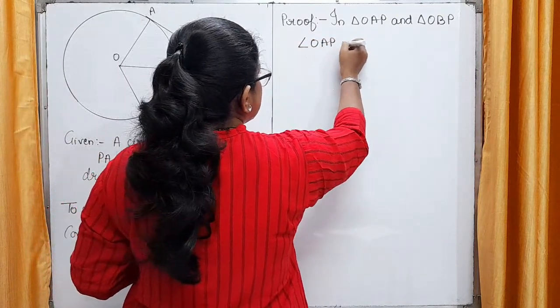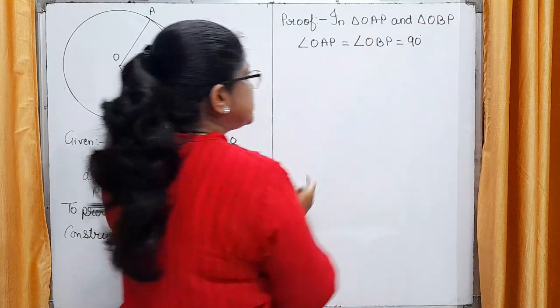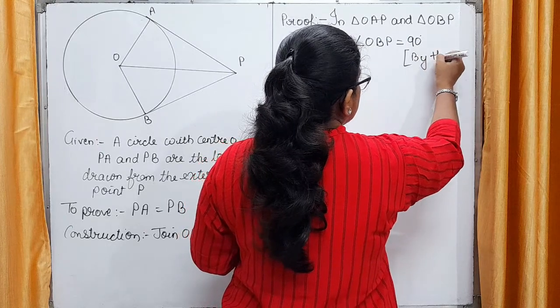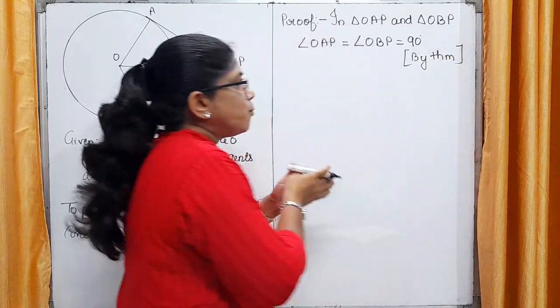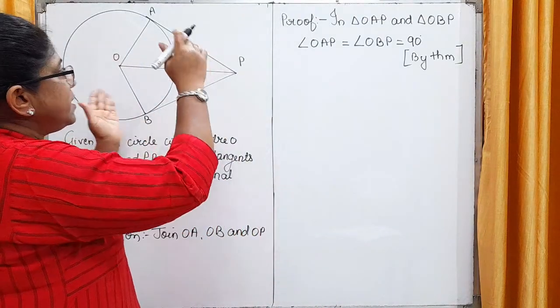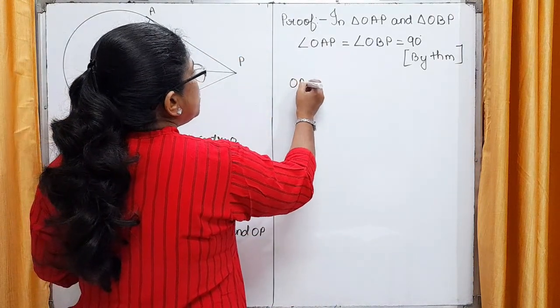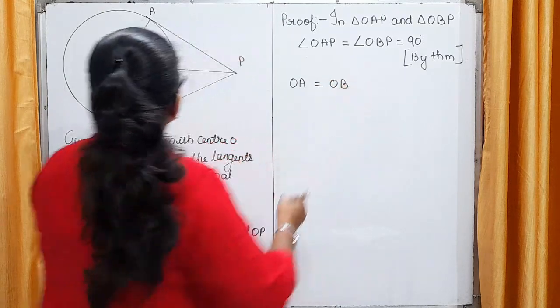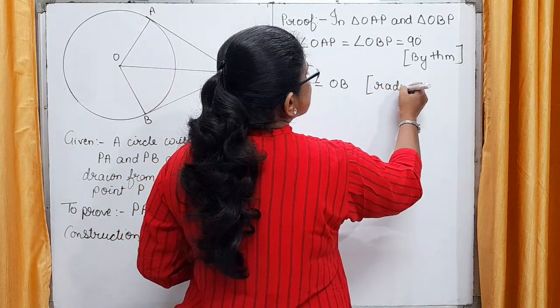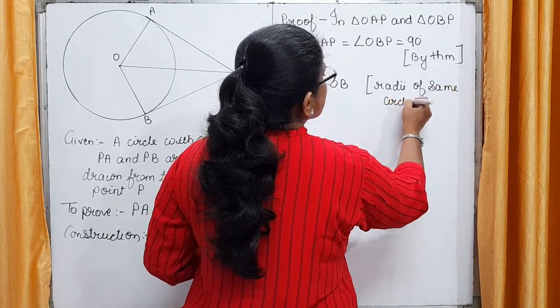Angle OAP is equal to angle OBP and this is equal to 90 degrees. How? Why? Let us write this is by theorem. Yes. In one theorem, we have one theorem in which it is said that radii and tangent are perpendicular to each other. Next, OA is equal to OB. OA is equal to OB. Simple. They are radii of same circle.